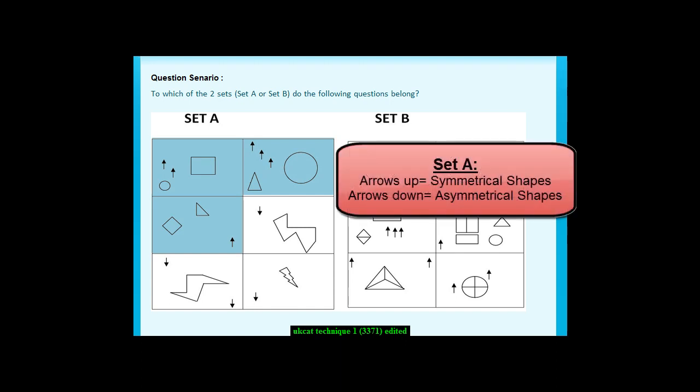In conclusion, set A. Arrows pointing up equals symmetrical shapes and arrows pointing downwards equals asymmetrical shapes.